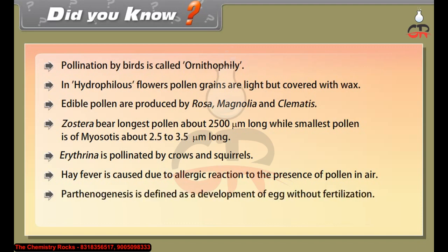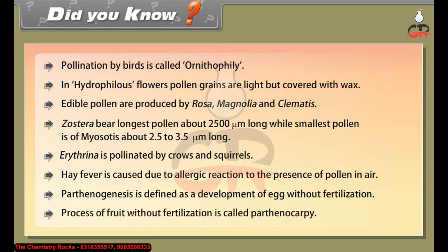Parthenogenesis is defined as the development of an egg without fertilization. The process of fruit formation without fertilization is called parthenocarpy.